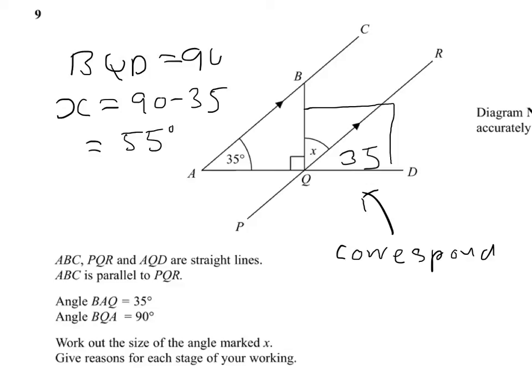The two reasons are that the 35 comes from the corresponding angle, and because BQD is a right angle, we've got one of those angles, the other angle is 55. There's your answer.